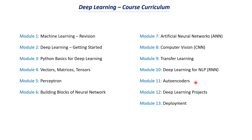The eleventh module will be on autoencoders, and the twelfth module will be on deep learning projects, where we will work on several use cases using neural networks. Rather than saving all projects for the end, I'll post deep learning project videos once in a while throughout the course — say after every five videos — so that we have both theoretical knowledge and practical experience, just like we did for the machine learning course.